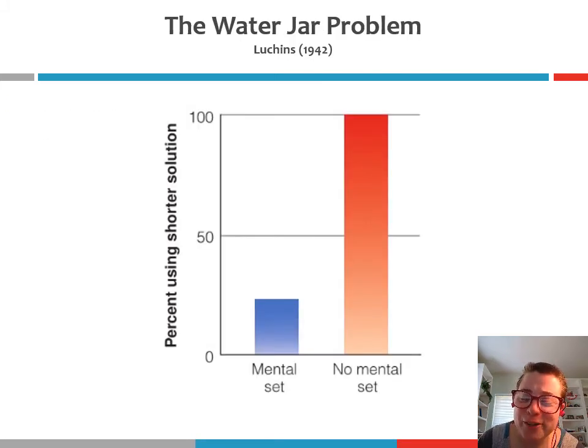The first psychological experiment using this particular problem, the water jar problem, was conducted by Luchins in 1942. He basically compared two different groups of participants. His first group of participants he called the mental set condition.